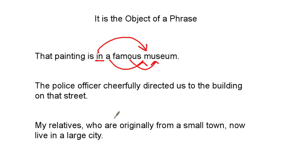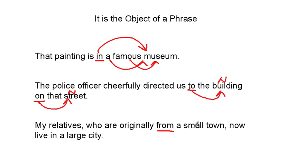'The police officer cheerfully directed us to the building on that street.' We have 'to' — a preposition — and 'on' — a preposition. To what? To the building — making 'building' a noun. On what? On the street — making 'street' a noun. Next: 'My relatives who are originally from a small town now live in a large city.' We have 'from' — a preposition modifying 'town' — noun; and 'in' — a preposition modifying 'city' — noun. Note also: 'a' and 'small' both modify 'town,' 'a' and 'large' both modify 'city,' and 'my' is a possessive adjective modifying 'relatives.'